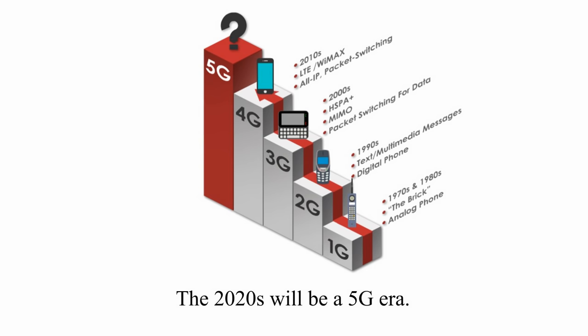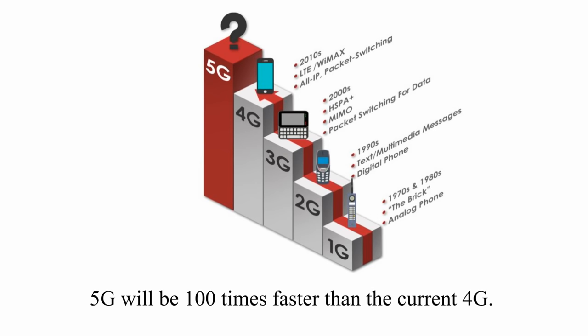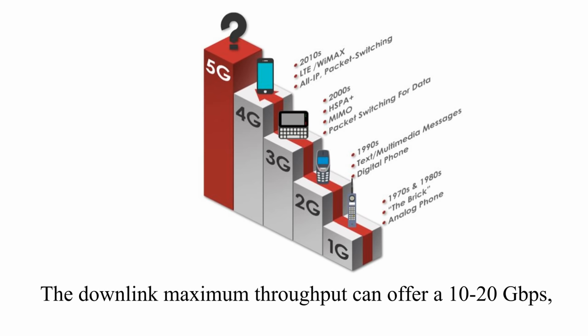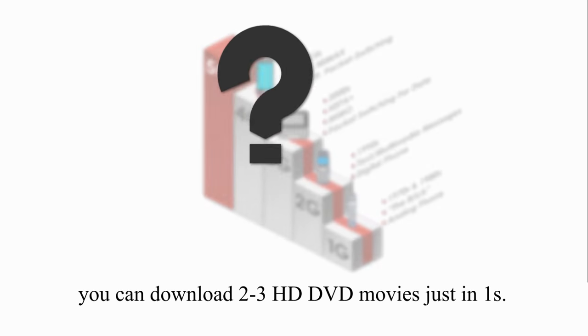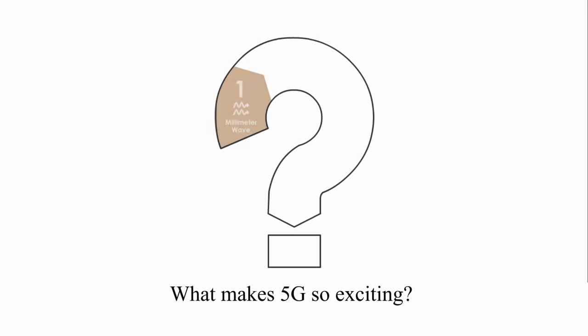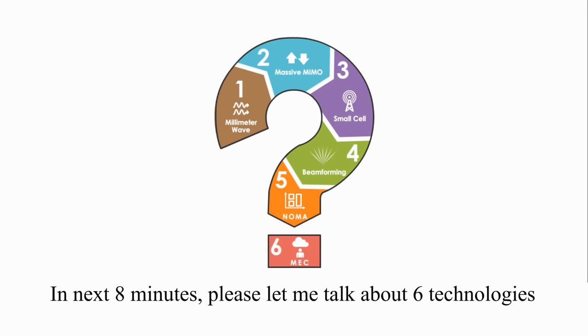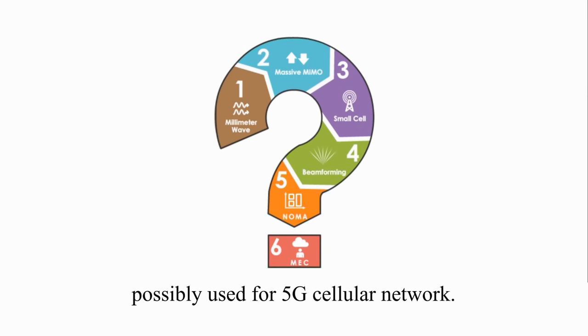The 2020s will be a 5G era. It is said that 5G will be 100 times faster than the current 4G, and the downlink maximum throughput can offer over 10 to 20 Gbps, which means you can download two to three high definition DVD movies in just one second. What makes 5G so exciting? In the next eight minutes, let me talk about six technologies, among many others, possibly used for 5G cellular networks.